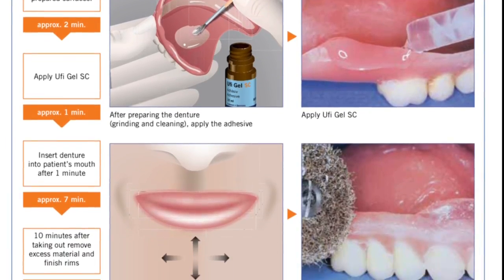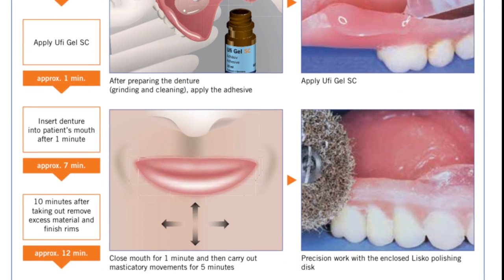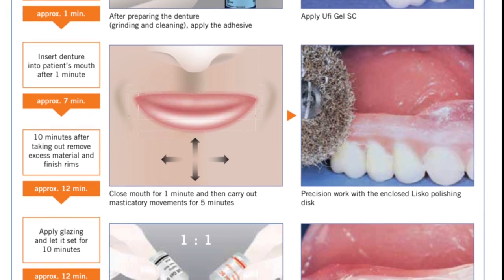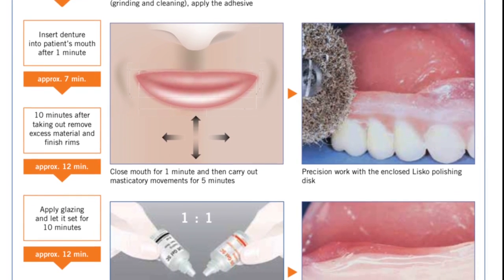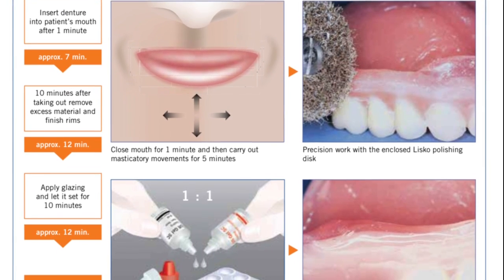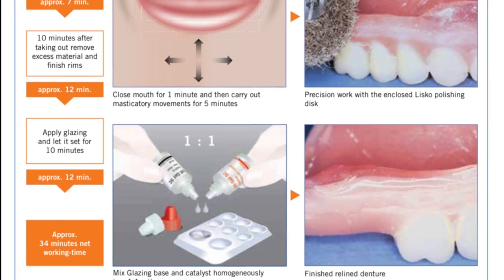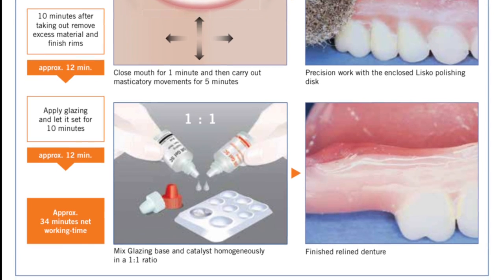I use VOCO Eufy Gel SC for my soft reline. It is an incredible product that's very biocompatible. It sticks to the printed resins if you follow the instructions. And we're going to go through this kind of slow here how you actually do these types of things with this particular material.